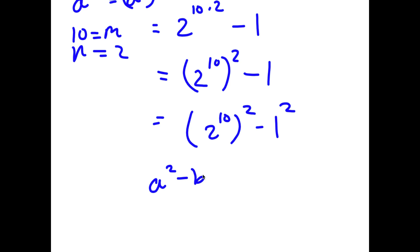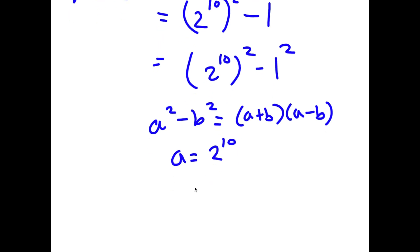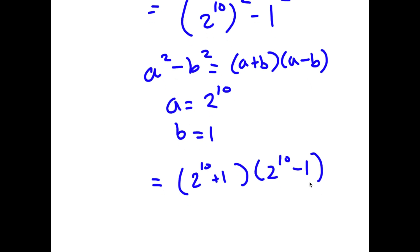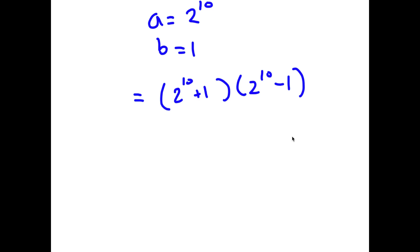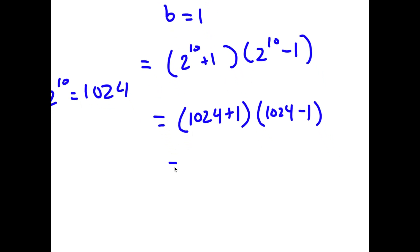Now I have something in the form a squared minus b squared, which equals a plus b times a minus b. Here a is 2 to the power of 10 and b is 1. So I can rewrite this as 2 to the power of 10 plus 1 times 2 to the power of 10 minus 1. Since 2 to the power of 10 equals 1024, I have 1024 plus 1 times 1024 minus 1, which is 1025 times 1023.